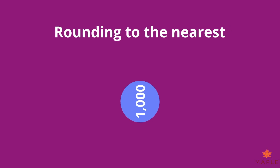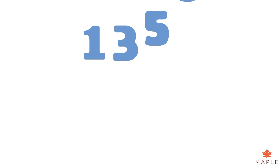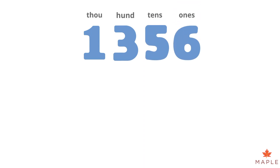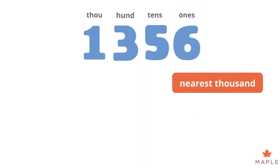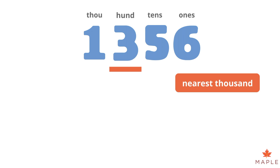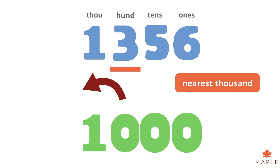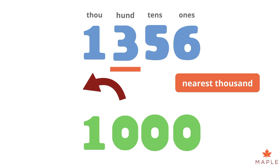Rounding to the nearest thousand. One thousand three hundred and fifty-six. We can look at the hundreds column. The three in the hundreds column is less than five — it represents three hundred — so we round down. And the answer is one thousand.